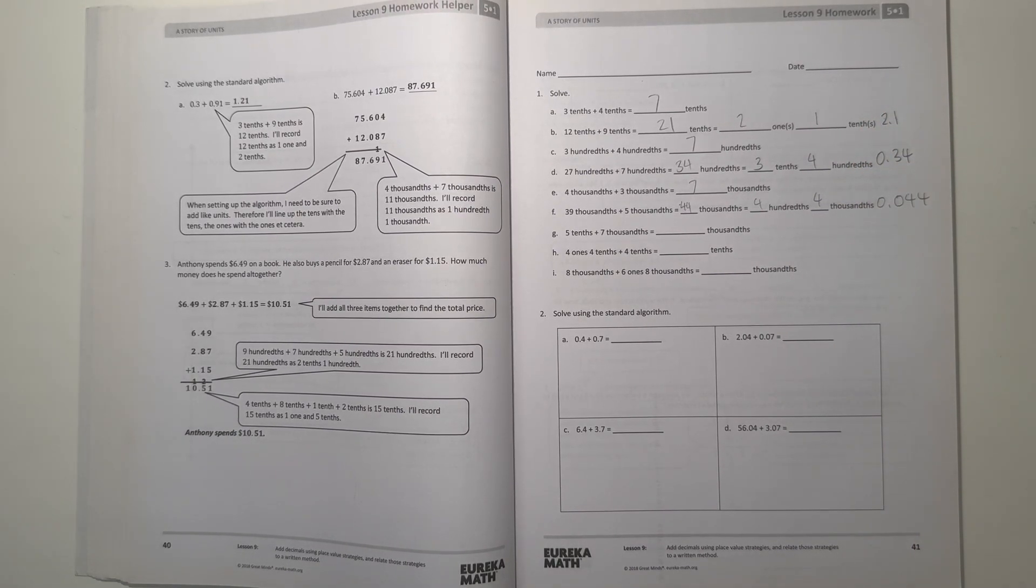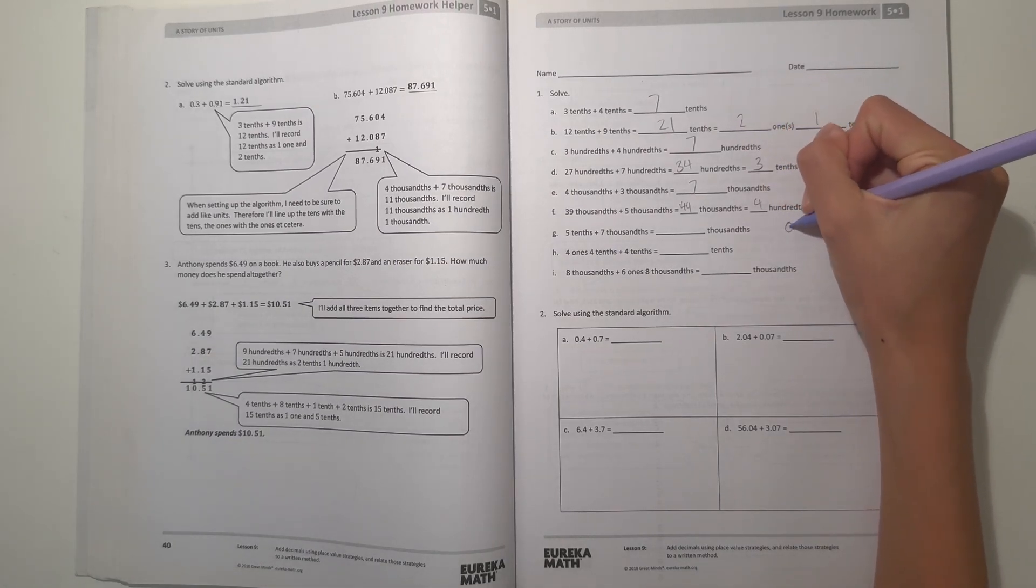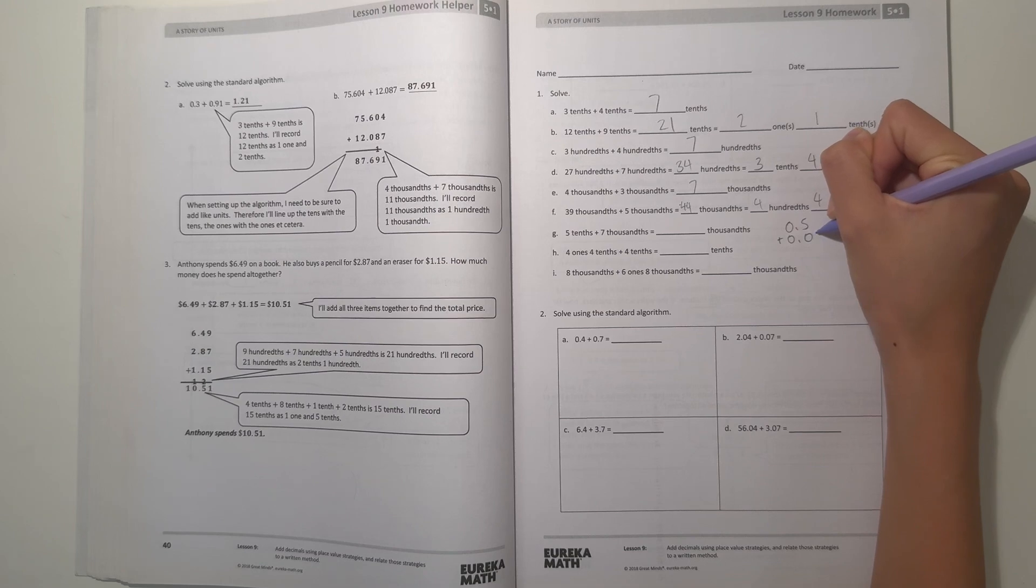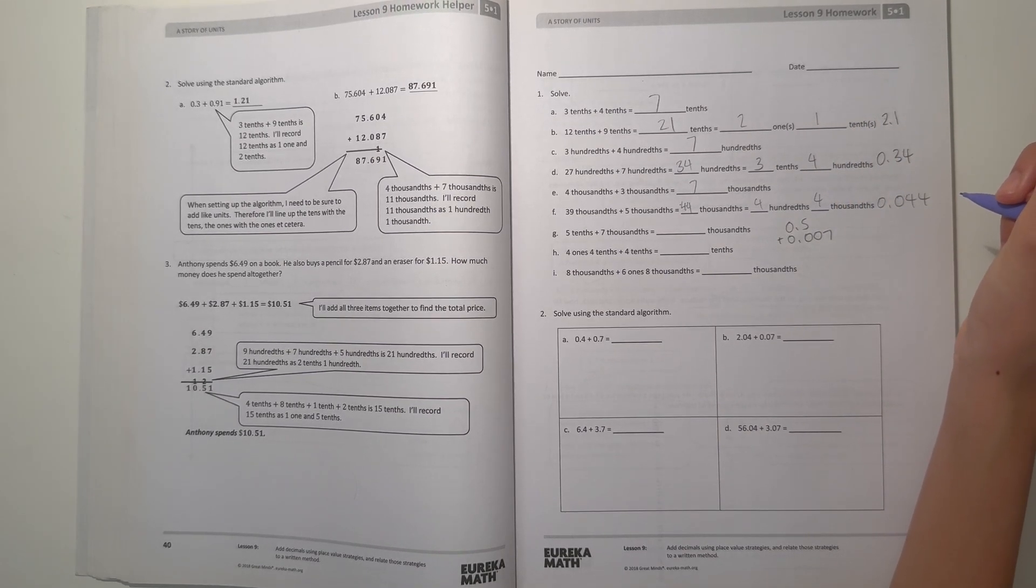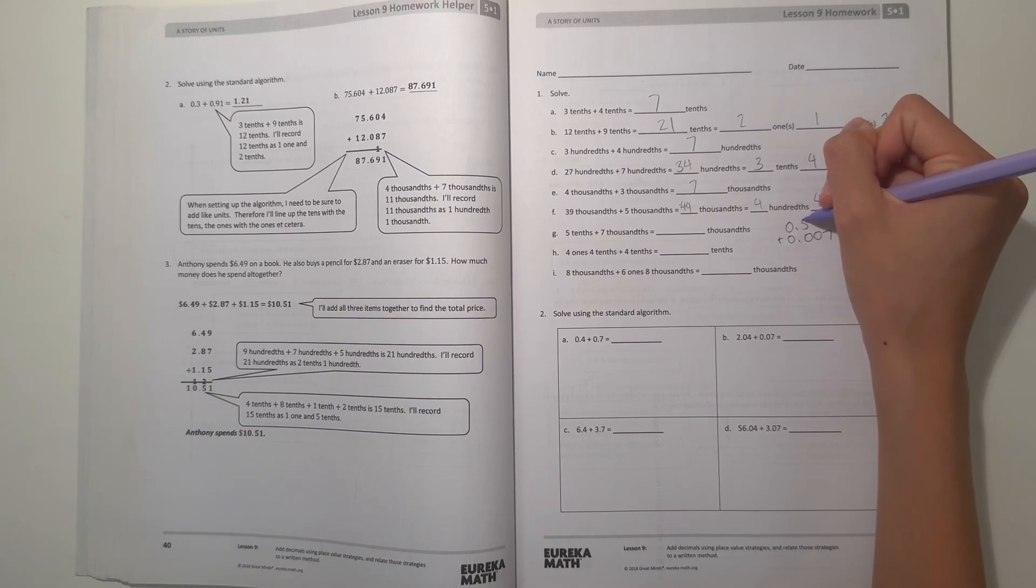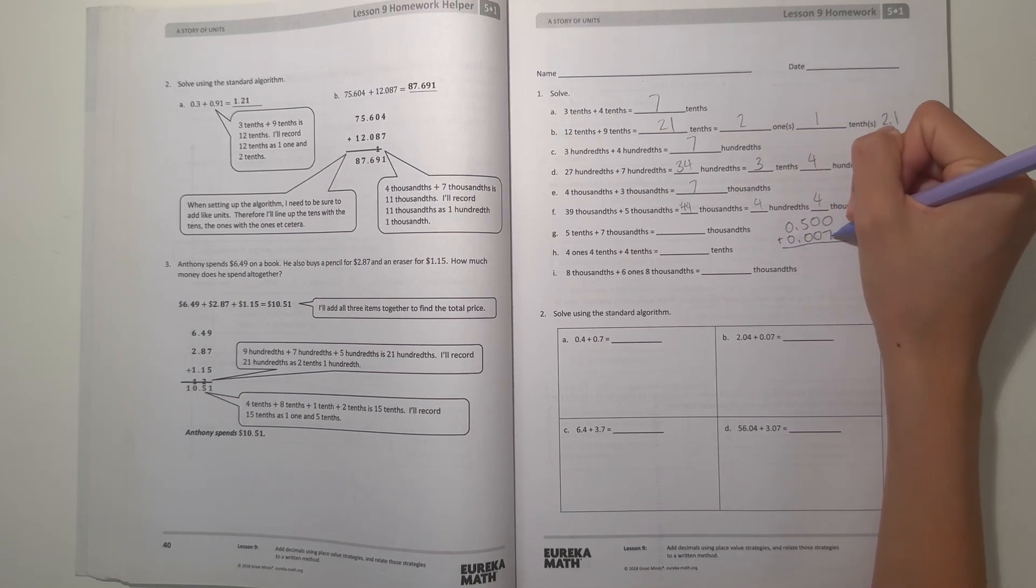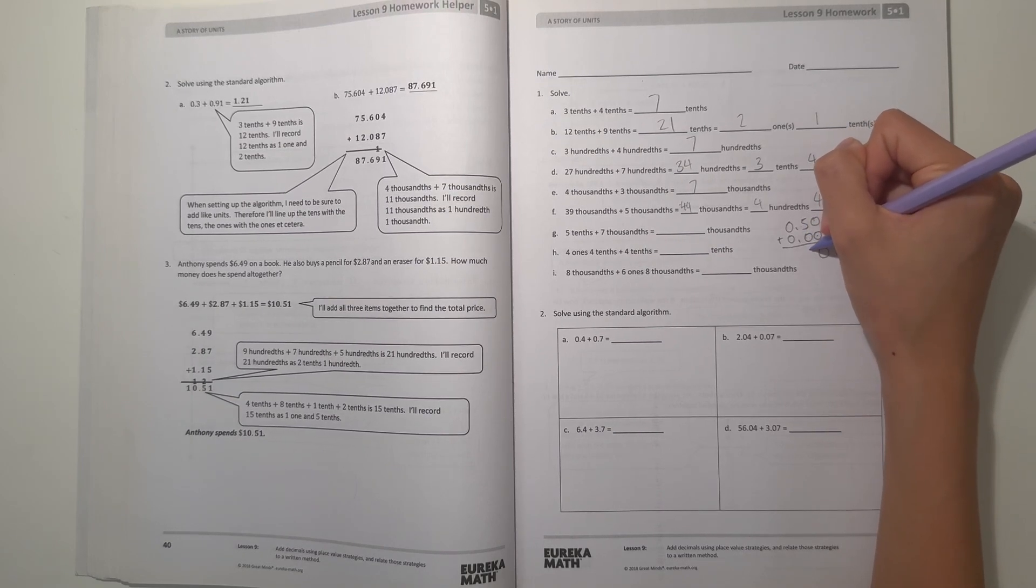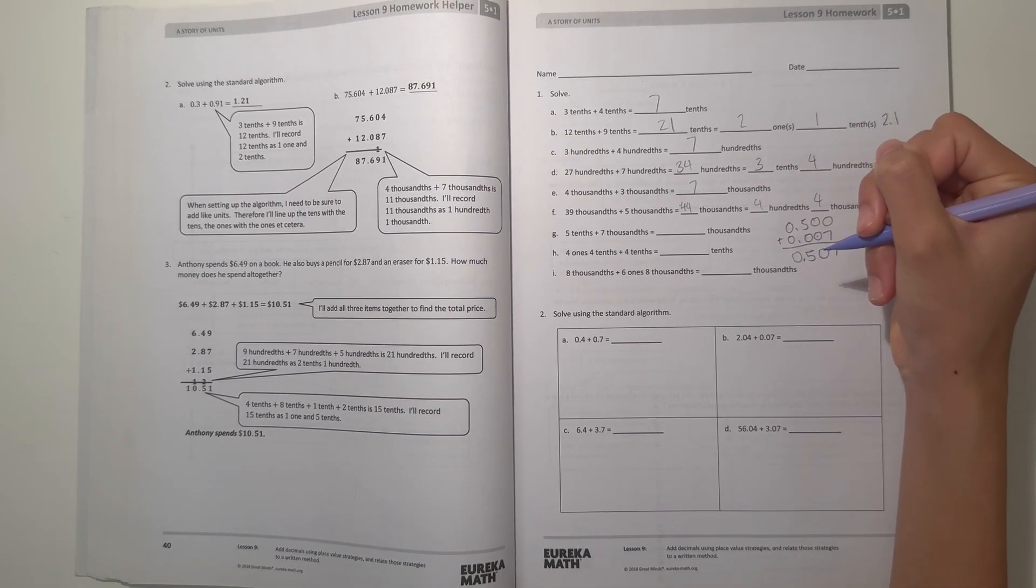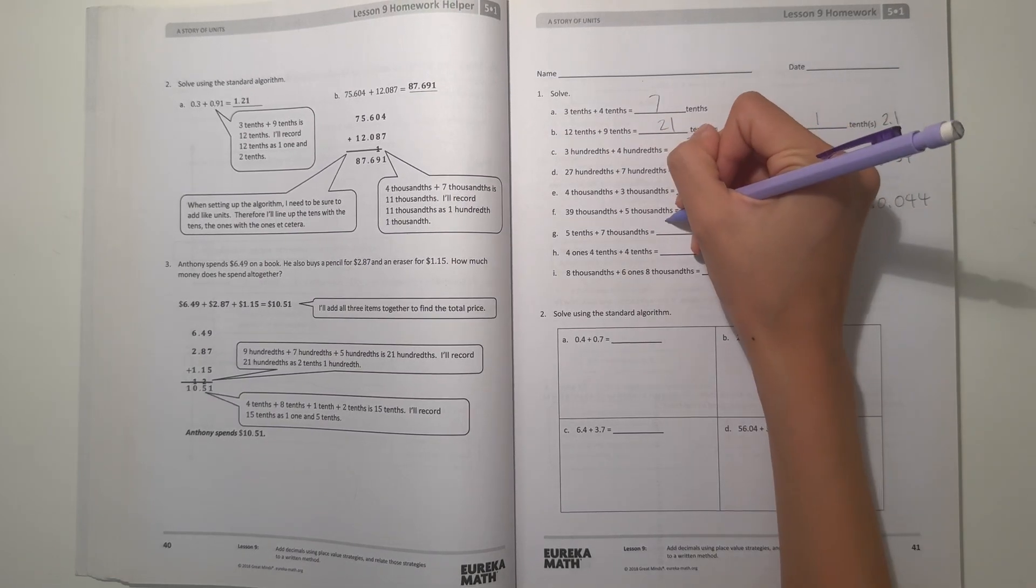Alright, and G, 5 tenths plus 7 thousandths. So we have two different units here. One thing that I learned when I was in 5th grade, my teacher, what helps is that you can write it in standard form. So 5 tenths would be 0.5 plus 7 thousandths would be 0.007. And when I'm doing the standard algorithm, I would always write 0 at the end of the other numbers to help me. So then 0 plus 7 is 7, 0 plus 0 is 0, 5 plus 0 is 5, and 0 plus 0 is 0. And move the decimal point down. So I have 0.507. So that number has 507 thousandths.